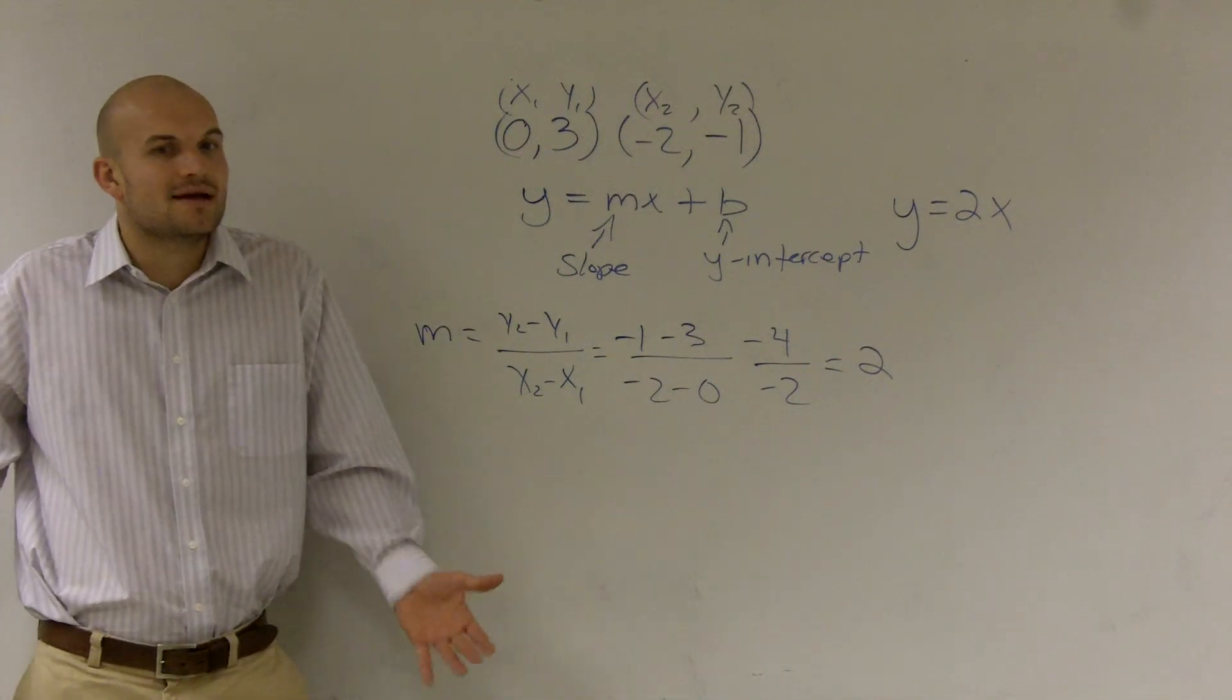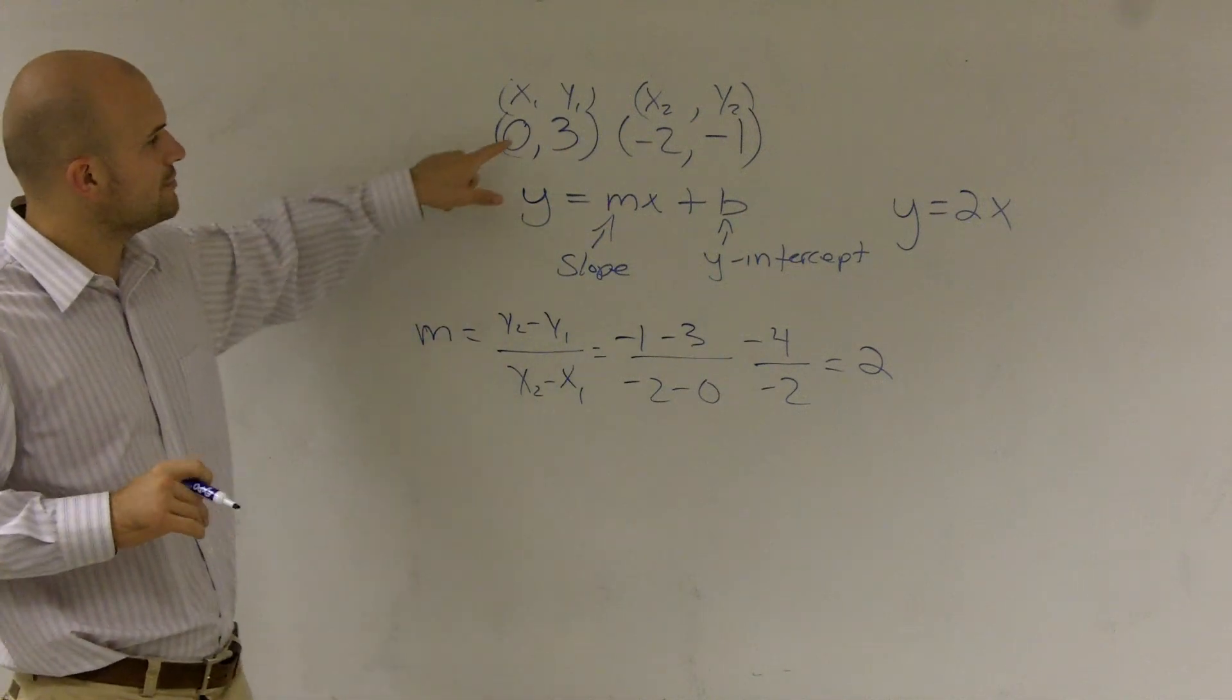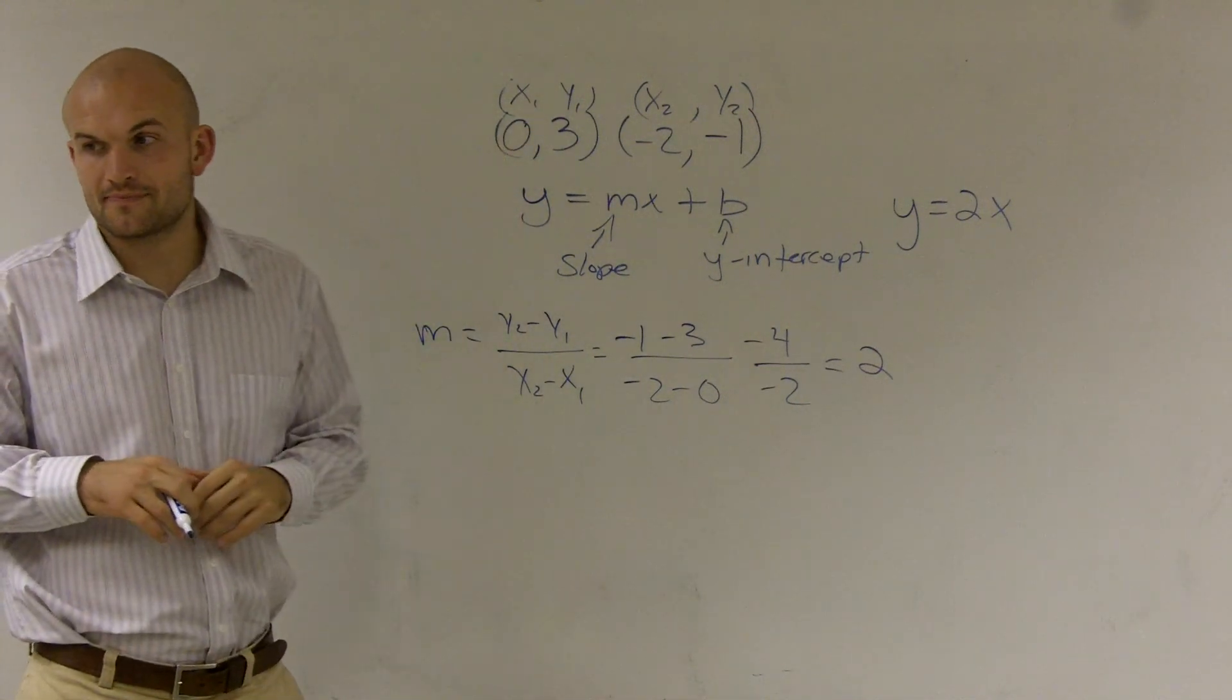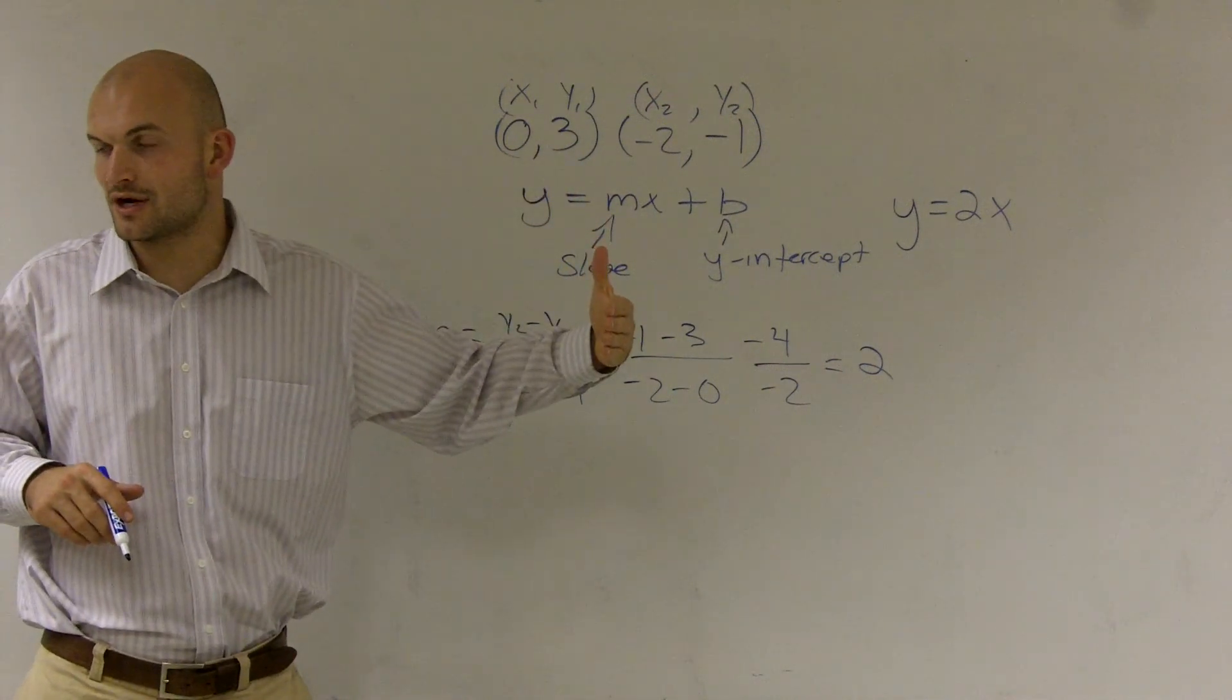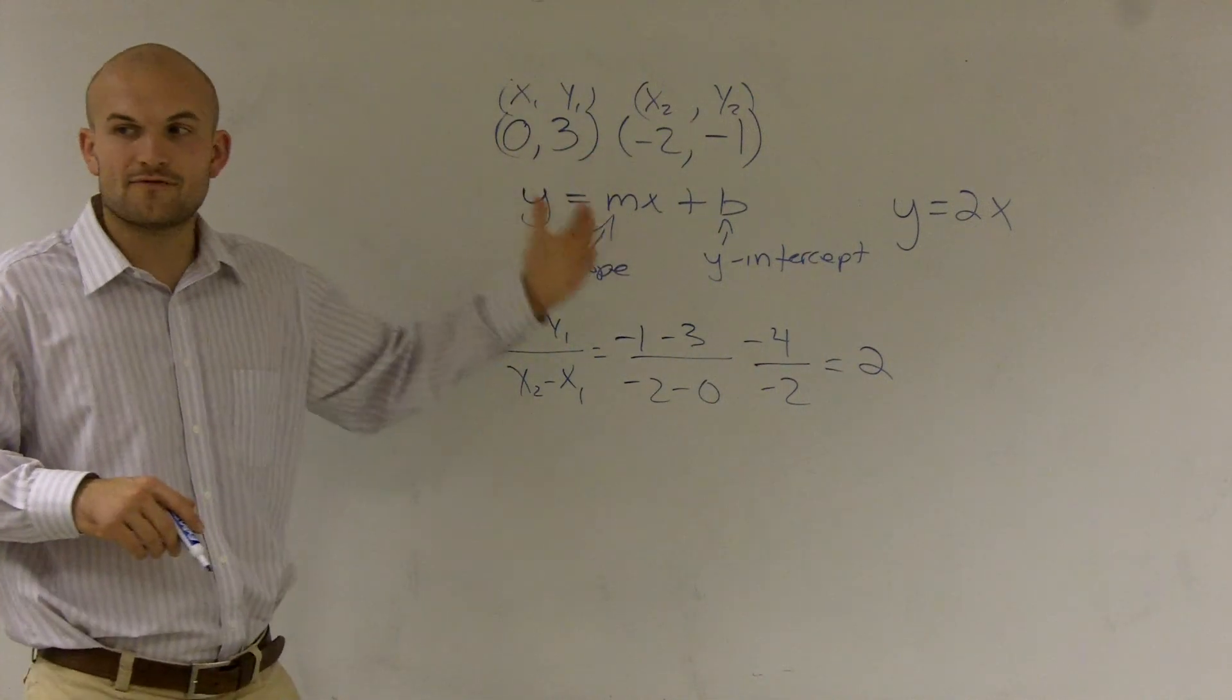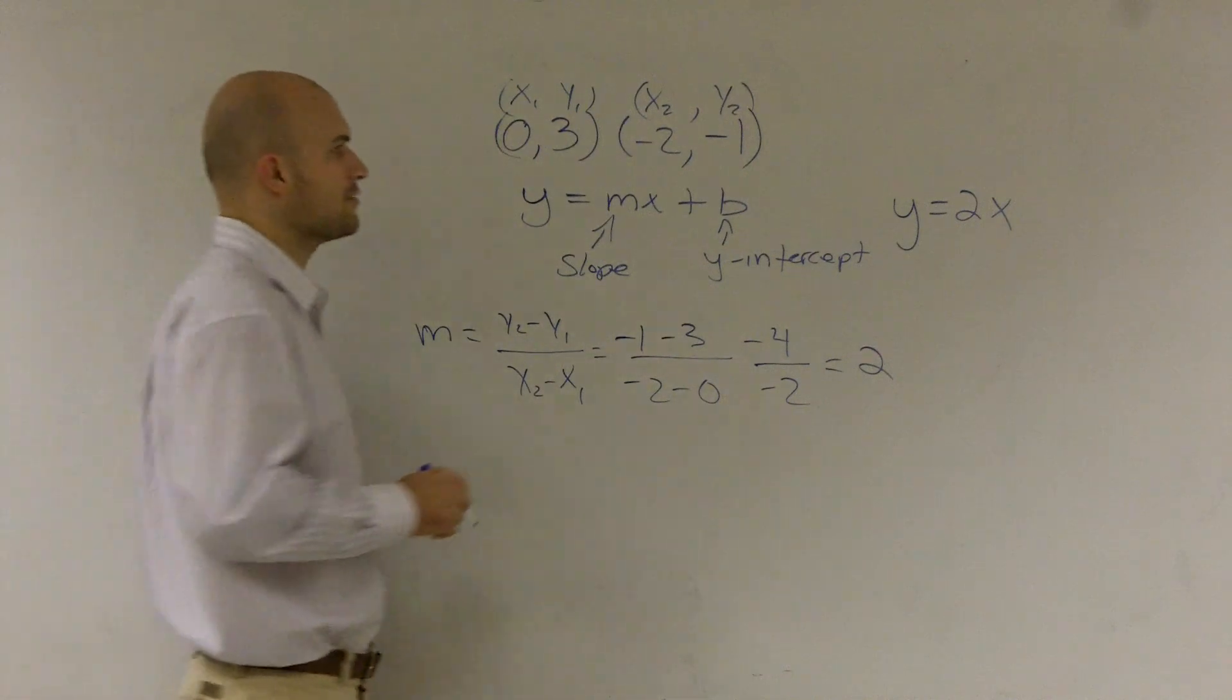Because my b is my y-intercept. However, there's a very important thing that we look up here. Between our two points, if you notice, one of my points is 0 comma 3. Well, 0 tells me I haven't moved anywhere on the x-axis. Therefore, this point is on the y-axis. Therefore, it must be my y-intercept. So I can say the y-intercept is going to be 3.